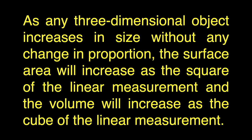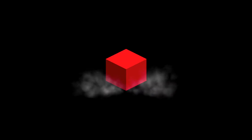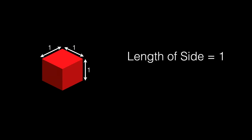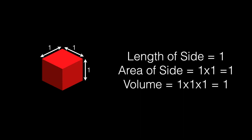Let's look at this with some demonstrations. Let's start with a cube with a dimension of one — this could be inches, meters, or even furlongs, it doesn't matter. The length, width, and height are all one. With the side length equal to one, the area of each side is one times one, or one square unit, and the volume is one times one times one, or one unit in volume.